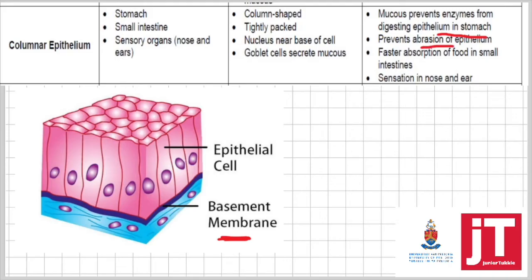The mucus also prevents food from rubbing against the stomach wall and cells, preventing abrasion of the epithelium. In the small intestine, the single layer of columnar epithelium allows nutrients to be absorbed faster. In the nose, chemical substances must dissolve in the mucus first for you to be able to smell. Certain columnar epithelium is also found in the ear for sensation.